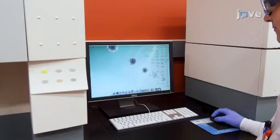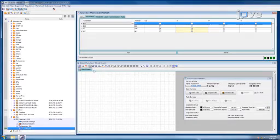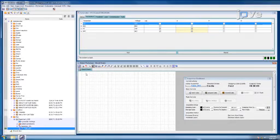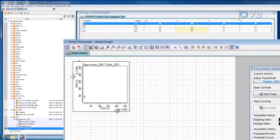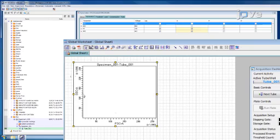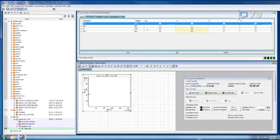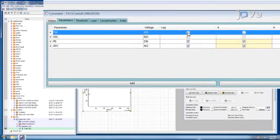Start up the flow cytometer and acquisition software according to the manufacturer's instructions provided with the instrument. Create a dot plot with forward scatter on the X axis and side scatter for the Y axis. Set forward scatter and side scatter to linear mode.